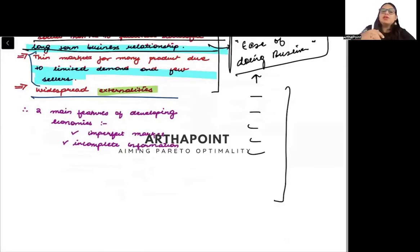Two main features of developing economies are: first, imperfect market. Markets are not perfect. And second, incomplete information. The consumers and producers don't have complete information in the market.